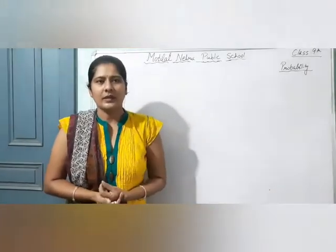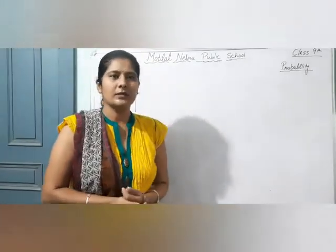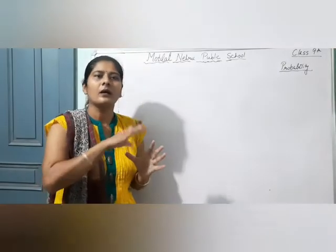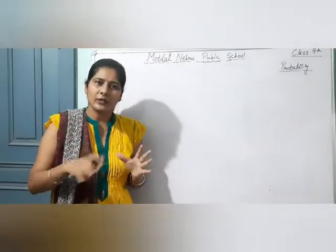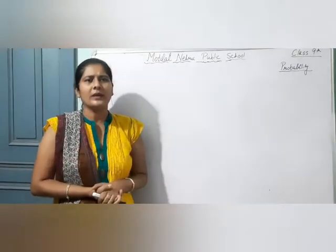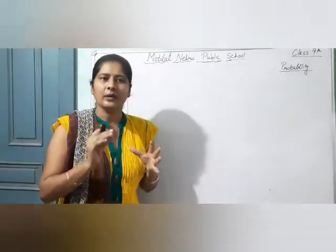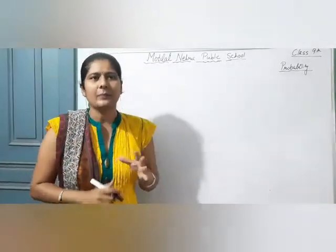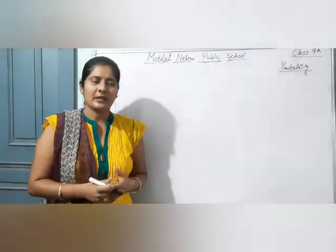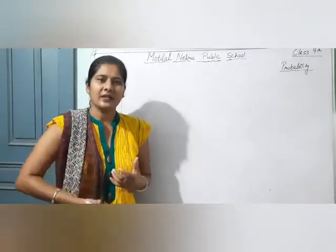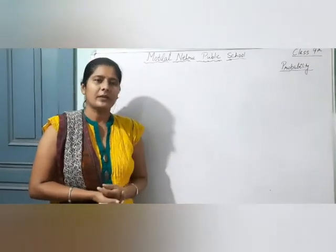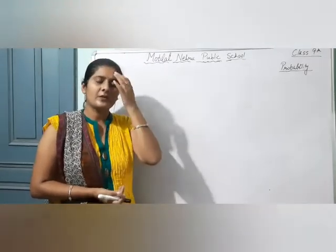So probability mainly होता क्या है. You have heard the game of chance. Game of chance — एक wheel होता है या dice होता है, आपको उसे घुमाना होता है. उसमें numbers होते हैं 1 to 8, और किसी एक particular number आने पर आप जीतते हैं. तो यह होता है कि उस number के आने के, आपके जीतने के कितने chances हैं, कितनी possibilities हैं. That is probability.